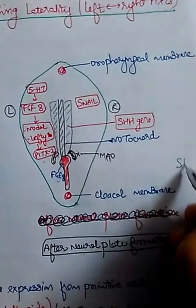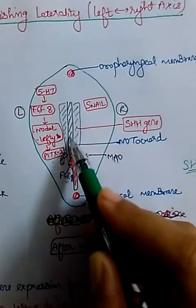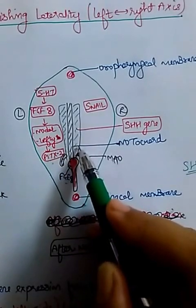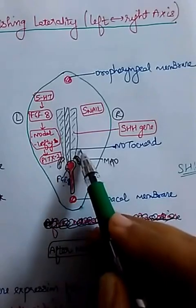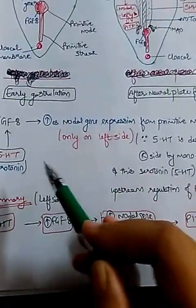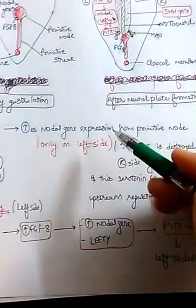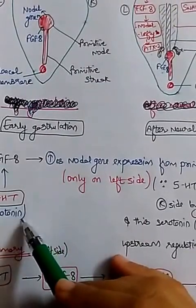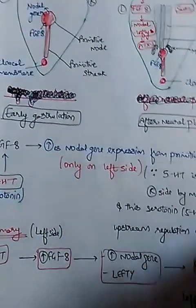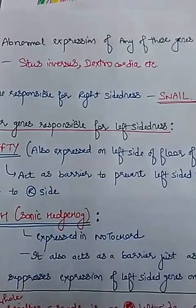Apart from these genes, there is one more gene — SHH, the sonic hedgehog gene. It is expressed by the notochord and also acts as a midline barrier, suppressing the expression of left-sided genes on the right side. Even if some left-sided gene expresses on the right, the sonic hedgehog gene inhibits its expression. So FGF8 increases nodal gene expression from the primitive node only on the left side, leading to nodal, lefty, and then PITX2 expression and left-sidedness. A defect in serotonin can also lead to situs inversus.